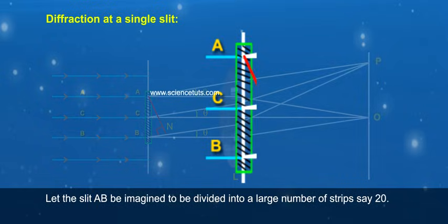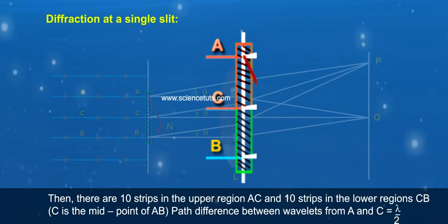Let the slit A-B be imagined to be divided into a large number of strips, say 20. Then there are 10 strips in the upper region A-C and 10 strips in the lower regions C-B. C is the midpoint of A-B.